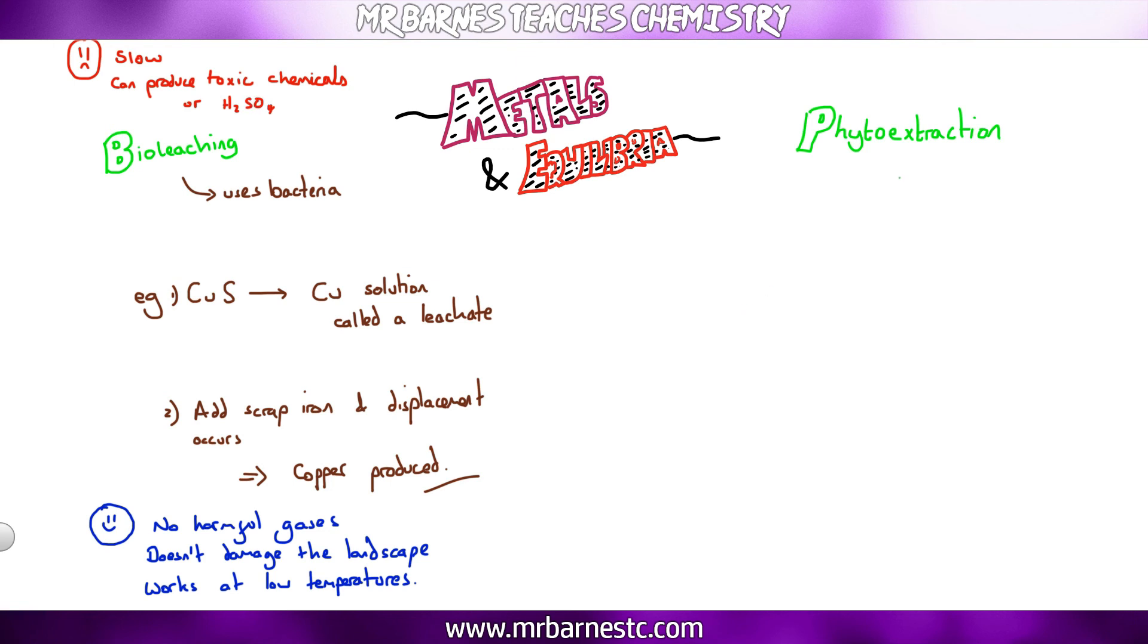The second way to extract your low-grade ore is phytoextraction, and again you probably can figure out from the name that's to do with plants. So what we do is we take a plant, we make it grow and it will absorb any metals in the soil. When we then burn that plant, the ashes contain the metal and again we can use displacement reactions to fully collect that metal.